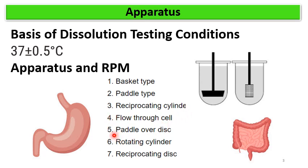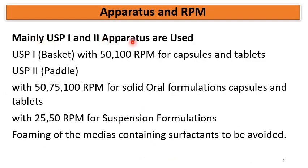USP-5, 6, and 7 are mainly used for transdermal patches. Basket and paddle apparatus (USP-1 and USP-2) are used most widely for formulations intended for oral administration.